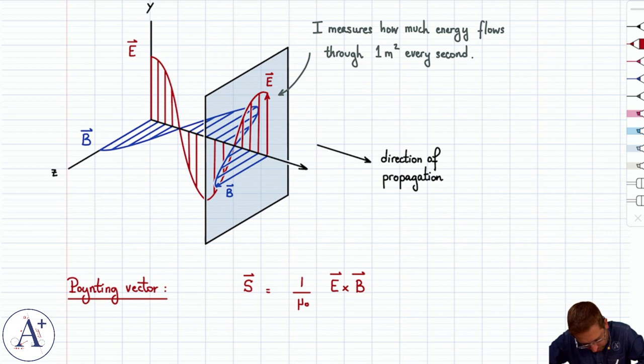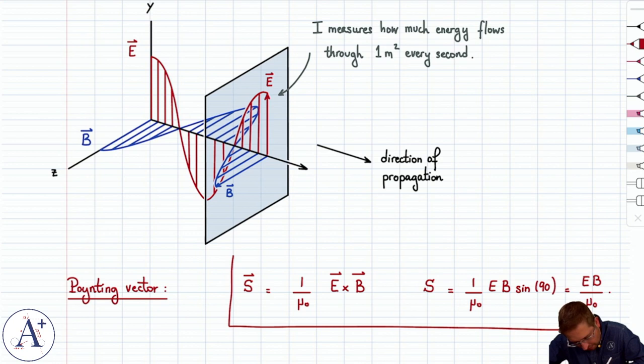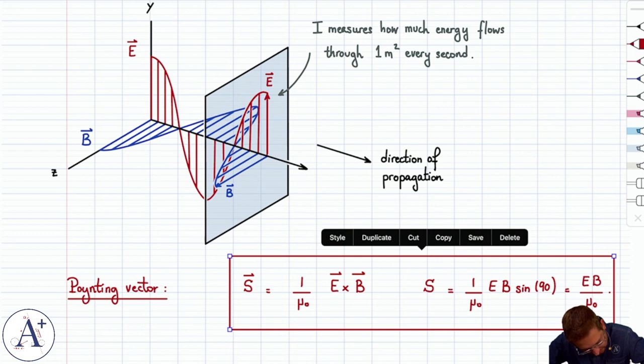Then we have a vector that has a magnitude S, which is 1 over μ₀, E, B, and then sine of 90 because E and B are perpendicular to each other. So we don't have to worry about that, it's just going to be EB over μ₀.